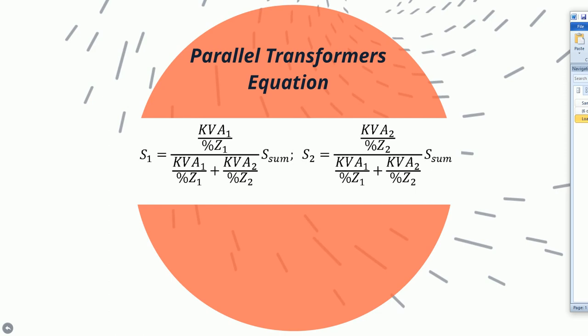The equation shows that there are two unknowns — the power through Transformer 1 and the power through Transformer 2 — which makes it difficult. We will need two equations, or we have to make assumptions and use trial and error. For this problem, since speed is a necessity, I recommend using the trial and error method.